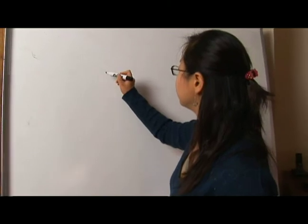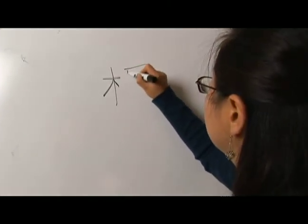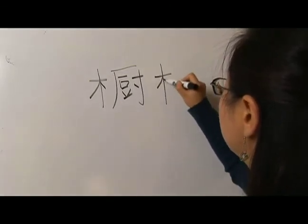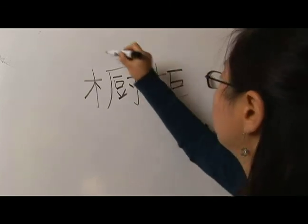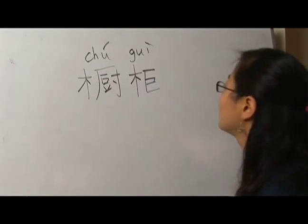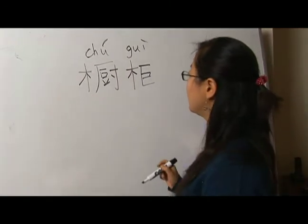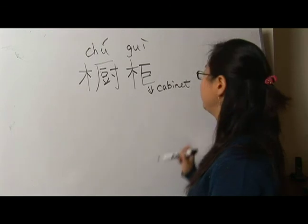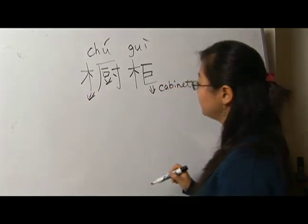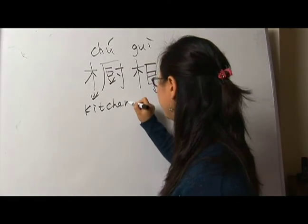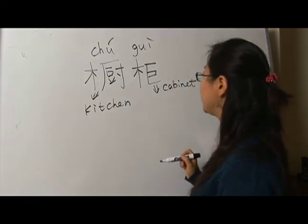Now, let's come to cupboard — 厨櫃. 厨櫃, we call cupboard another kind of cabinet. Because we use this character, 厨櫃, and 厨 here, it's something like kitchen. So the kitchen cabinet, cupboard.